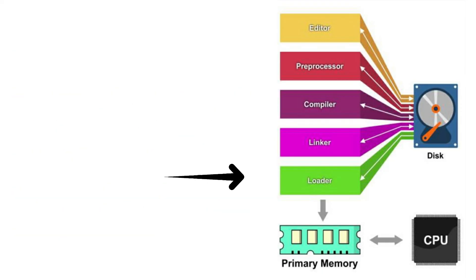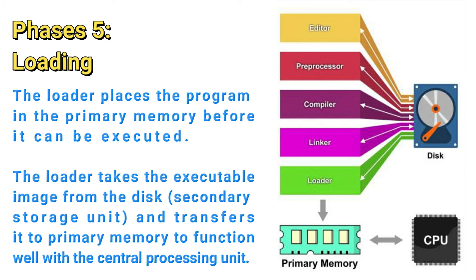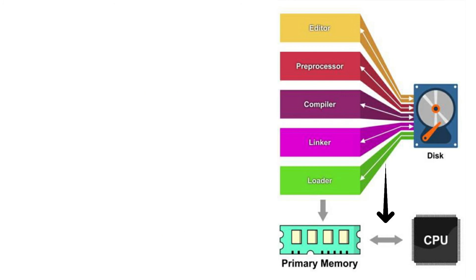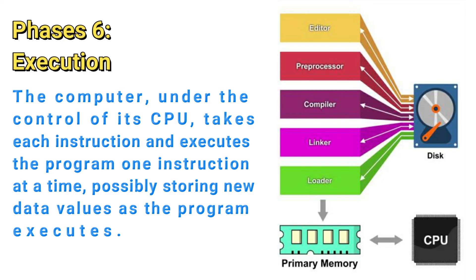Phase 5 is loading. Before a program can be executed, the program must first be placed in memory. This is done by the loader, which takes the executable image from disk and transfers it to memory. Take note that when we say disk, we are referring to the secondary storage unit or hard disk. And when we say transfer it to memory, we are referring to the primary memory, which is a short-term memory that functions with the CPU. And lastly, phase 6 is the execution. The computer, under the control of its CPU, takes each instruction and executes the program one instruction at a time, possibly storing new data values as the program executes.